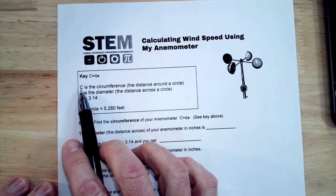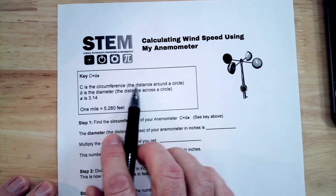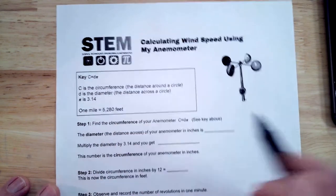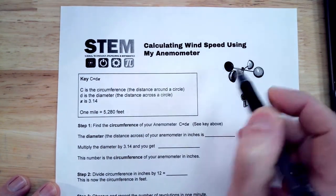A little math obviously here, so C is the circumference, that's the distance around a circle. In this case, it's going to be the distance around your anemometer.